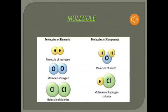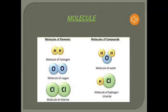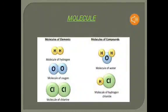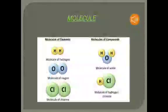Now we will explain the term molecule. A molecule is the smallest particle of a pure substance, element, or compound which can exist independently and retain the physical and chemical properties of the substance. A molecule of an element is formed from the same kind of atoms — for example, two hydrogen atoms or two oxygen atoms.